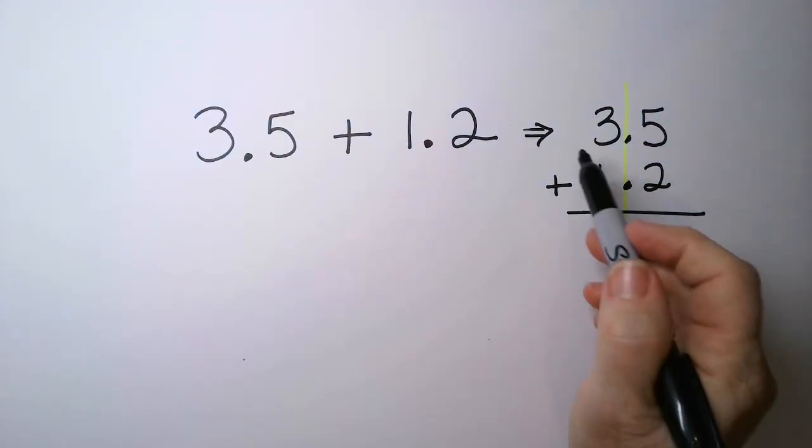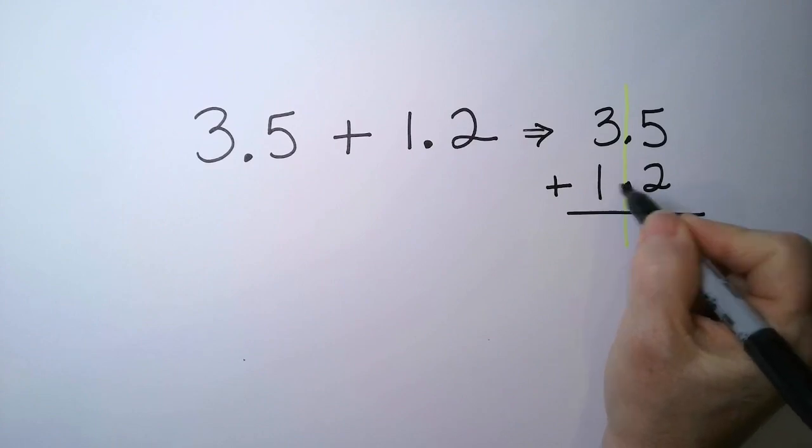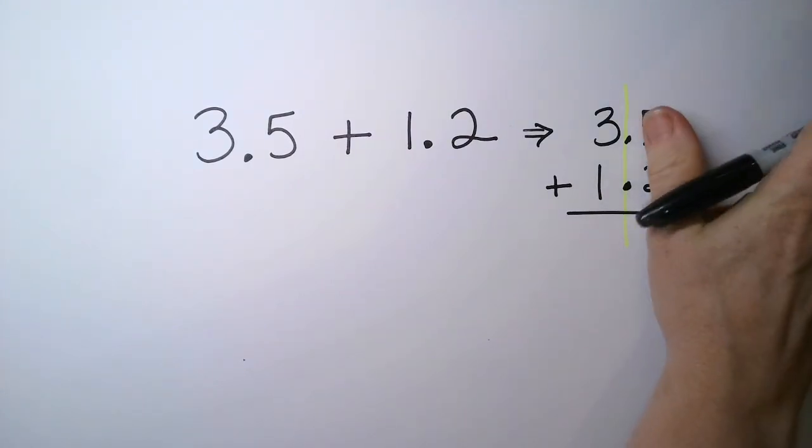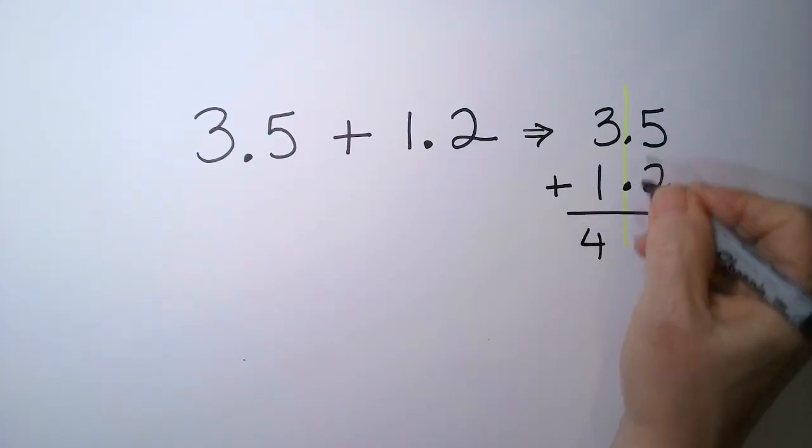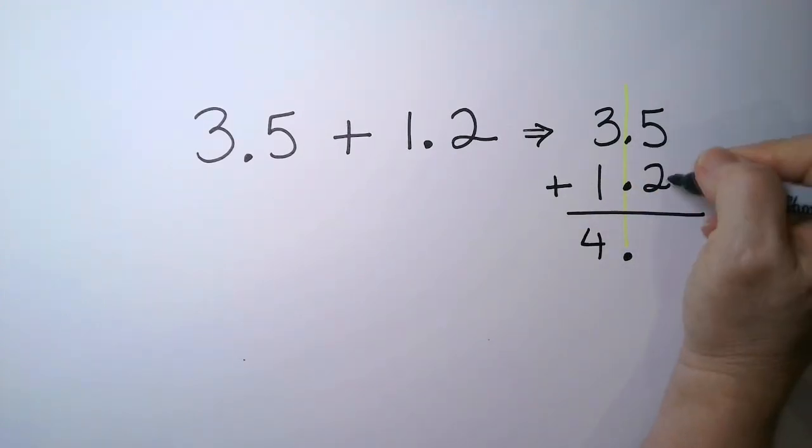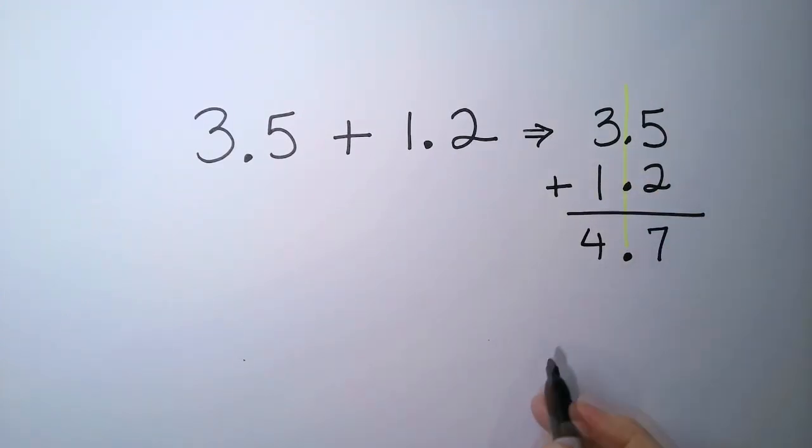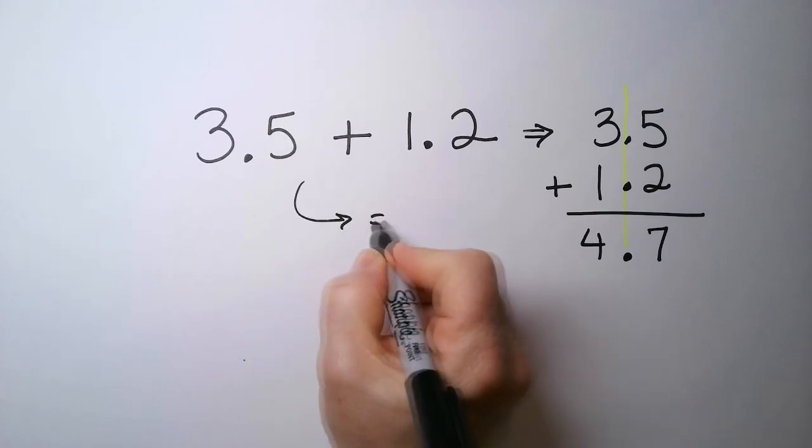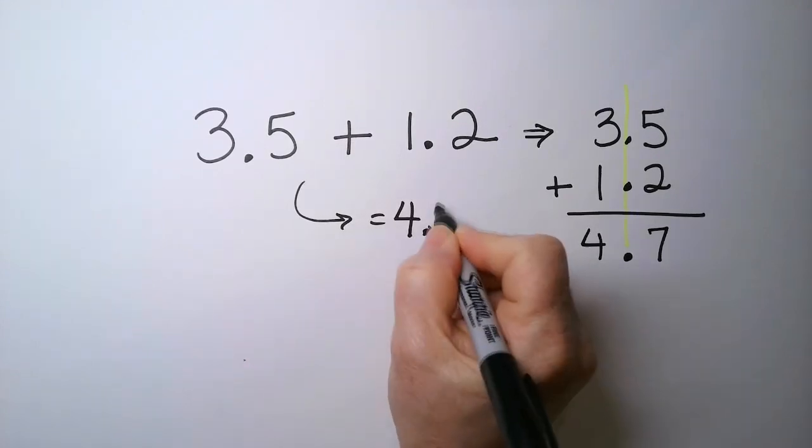So the first thing you do is you write one of the numbers, and then you put the decimal point, and then you build the number out. So 3 plus 1 is 4. Drop the decimal point. 5 plus 2 is 7. So my answer to this problem is 4.7.